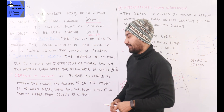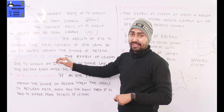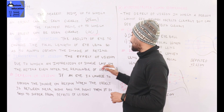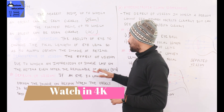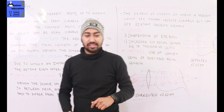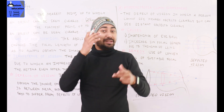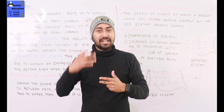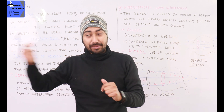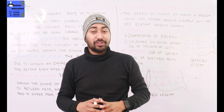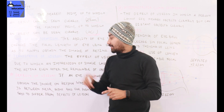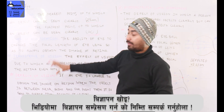Persistence of vision means the effect due to which an impression of an image lasts on the retina even after the removal of the object. The impression of the image lasts for 0.1 second on the retina. This is called persistence of vision.